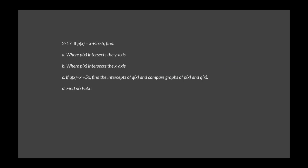On problem 2-17, they want you to use the P of X equation: X squared plus 5X minus 6. For part A, we're going to find the intercept for the Y axis. If it's the intercept of the Y axis, that means my zero goes on the X.